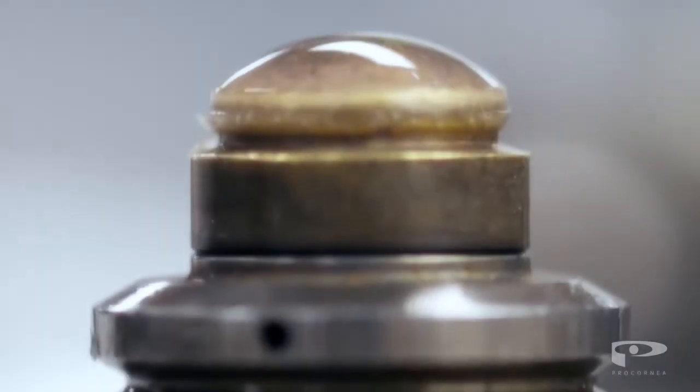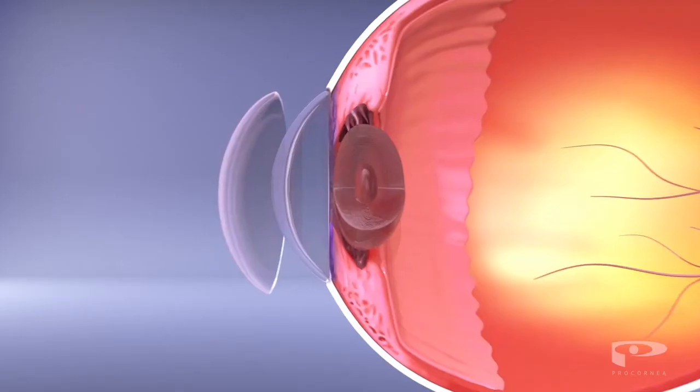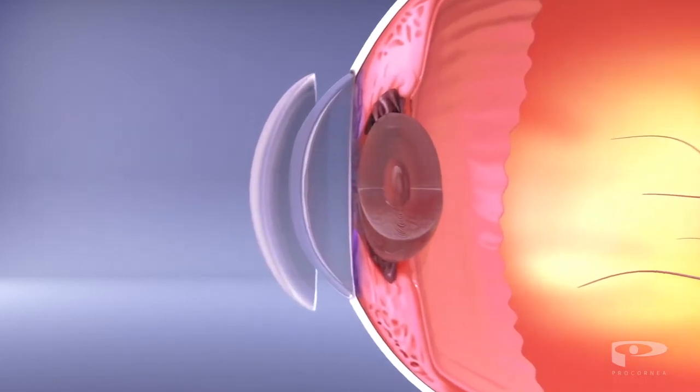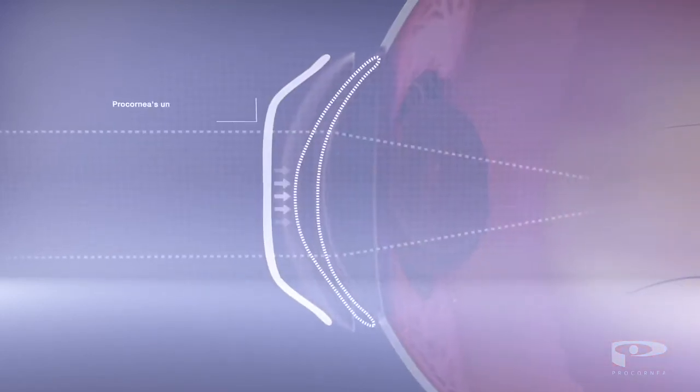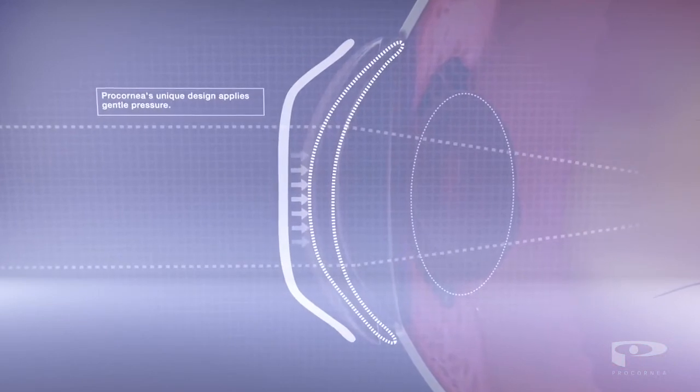The highly breathable lenses are worn overnight, and change the shape of the cornea through gentle pressure, realigning the focal point onto the retina while you sleep.